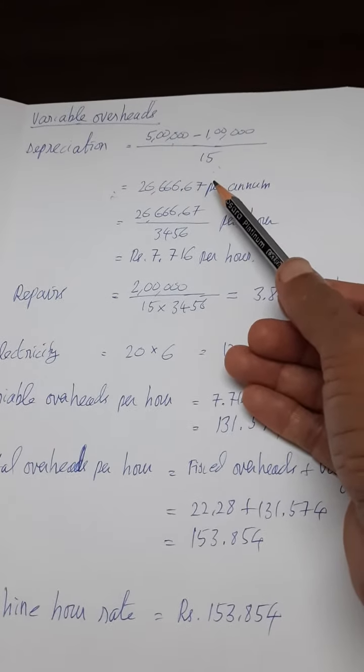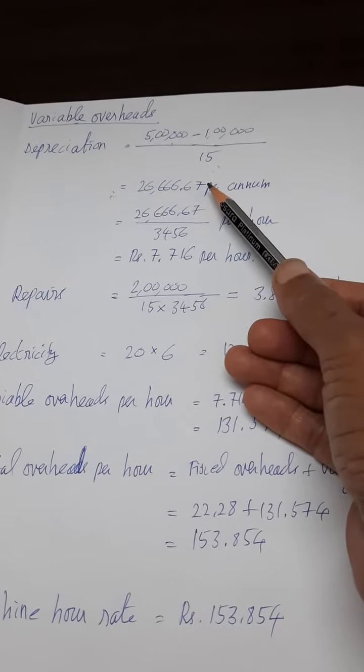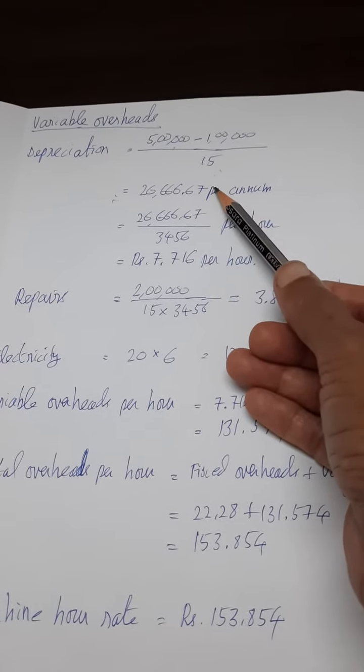At the end you will get a total amount of 5 lakhs or something to replace an old machine with a new machine. This is called depreciation.